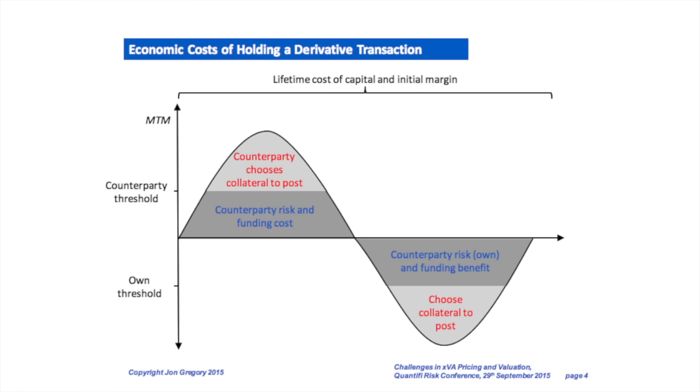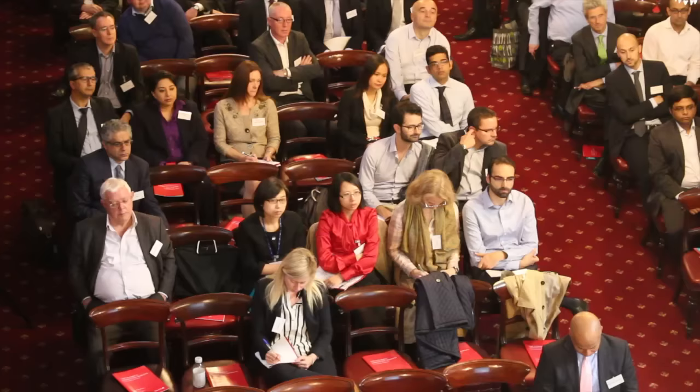At a high level, a derivative can be both in the money and out of the money. When it moves in the money, we have counterparty risk — if I'm uncollateralized, a default would mean I suffer losses. I might receive collateral above a threshold, and the counterparty decides what type of collateral to post. I also have a funding cost because, to the extent they're not posting collateral, I have to somehow fund the position without any collateral as a source of funding against it.